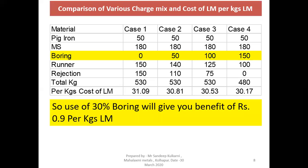Summarizing these four cases, we can see that as boring increases from 0 to 150 kg, the cost varies from 31 rupees 9 paisa down to 30 rupees 17 paisa. So almost 30% boring — that is 150 kg of boring — will give you a cost benefit of 90 paisa per kg of liquid metal, which is a huge cost saving.